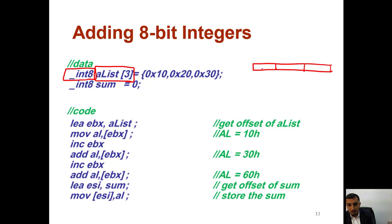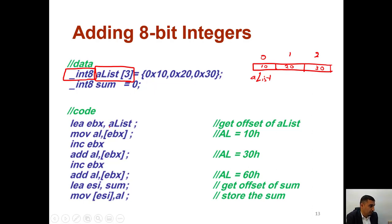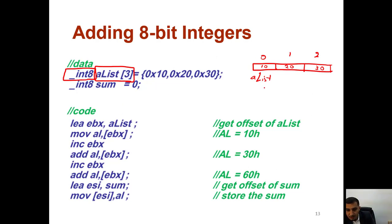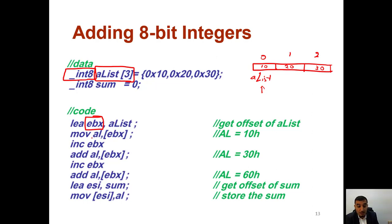We will have three memory locations: the first location will have 10, the second will have 20, the third will have 30, and our index is 0, 1, 2. Our beginning address is at 'a list'. If I say load effective address of 'a list' into BX, this means the address of the first location will be stored in EBX. EBX has the address of the location, not the value.